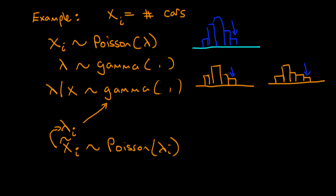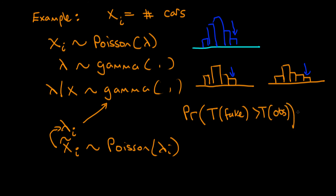By repeating this process many many times, we can calculate what is known as a Bayesian p-value, which is the probability that some summary statistic in the fake data exceeds the corresponding summary statistic in the observed data. If the Bayesian p-value is somewhere near 1 or alternatively near 0, that's telling us there is a model misfit — in both extreme cases our observed data is in the extremes of our fake simulated data, meaning the fake data isn't looking very much like our real data.